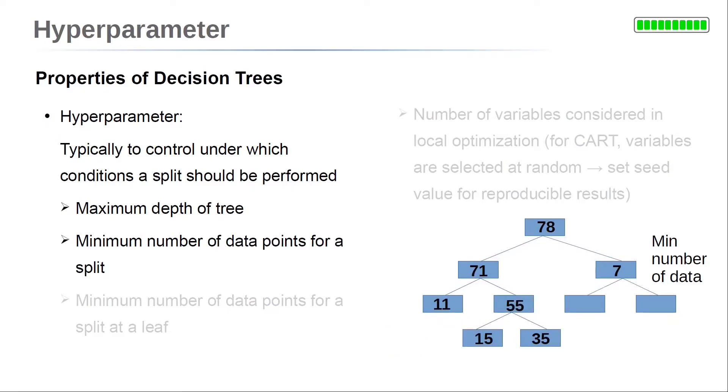The next hyperparameter is the minimum number of data points for a split. There has to be a sufficient number of data points to perform a split. For example, we can set this number to 10. In our example, on the right side of the tree, another split might give better training accuracy. However, the number of data points is 7 at this node, so no further split is considered. Another hyperparameter is the minimum number of data points at a leaf after a split.